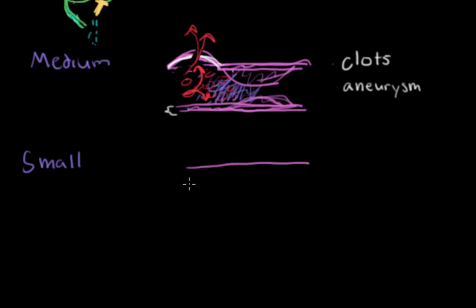Last of all, the final classification of blood vessels are small blood vessels. And by small, I mean microscopic. So we've got blood cells marching through nearly single file and a very thin blood vessel wall. You can imagine that damage to this wall can lead to breakage of the blood vessel really easily.